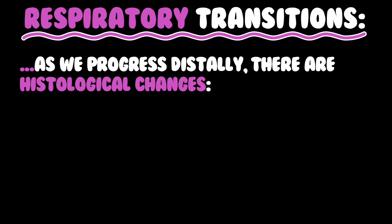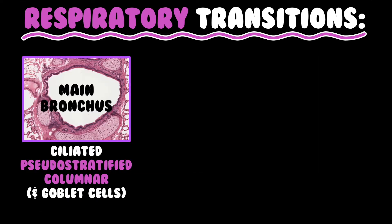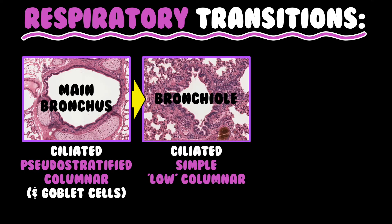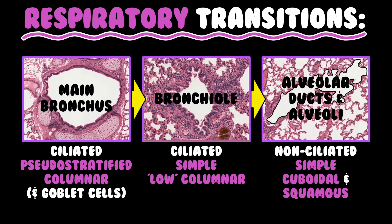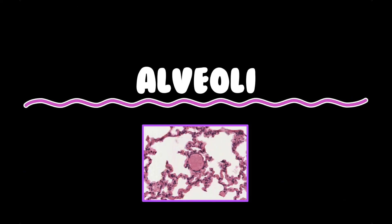As we progress distally there are histological changes: less cilia, decreased cell height, and less smooth muscle. The main bronchus has ciliated pseudostratified columnar epithelium with goblet cells and a lot of cartilage. Moving to bronchioles, there is ciliated simple low columnar epithelium and no cartilage. Moving to alveolar ducts and alveoli, there is non-ciliated simple cuboidal or squamous epithelium and no cartilage.